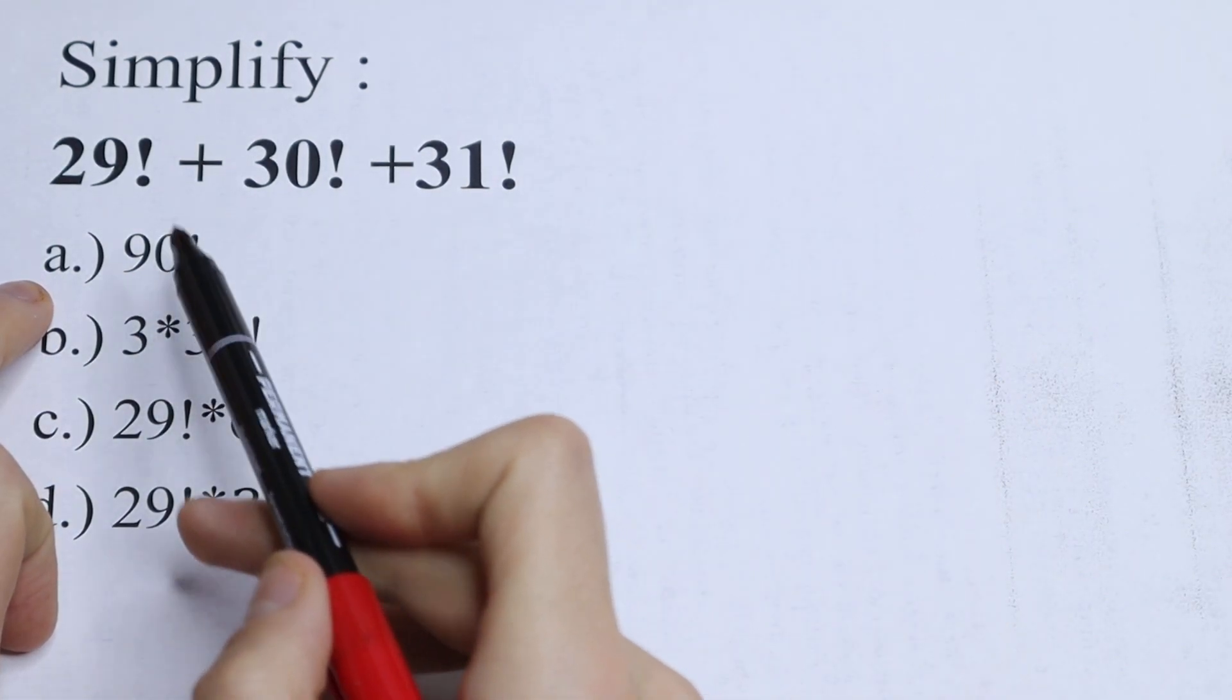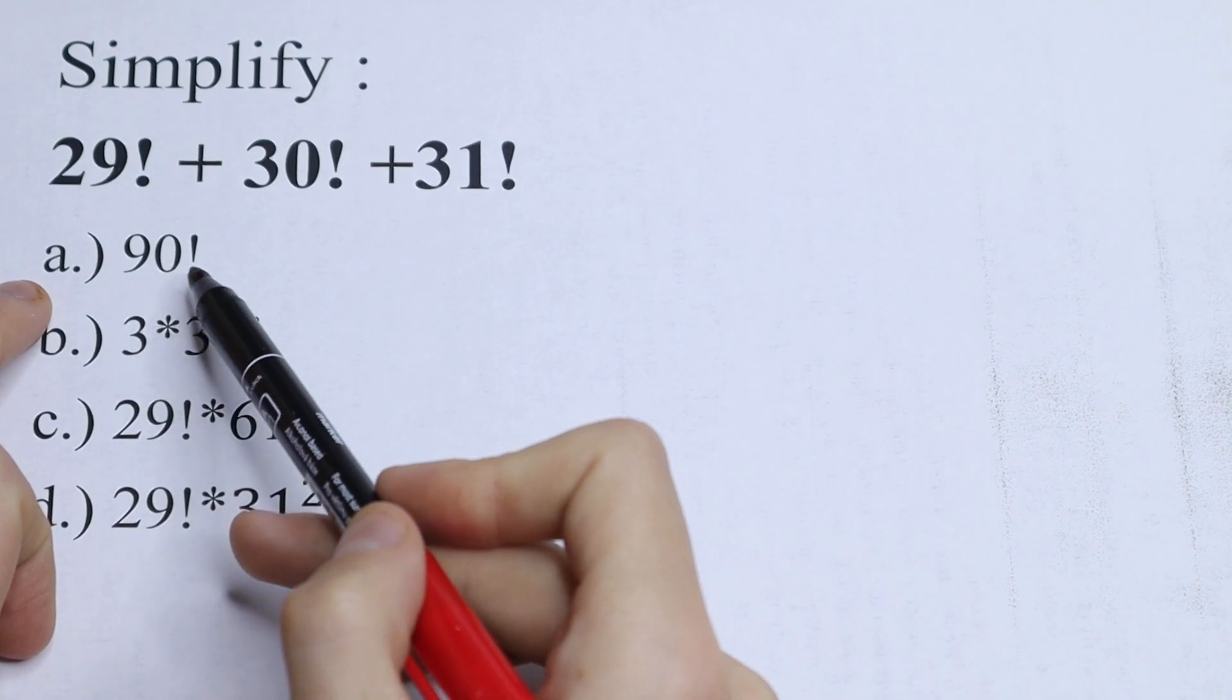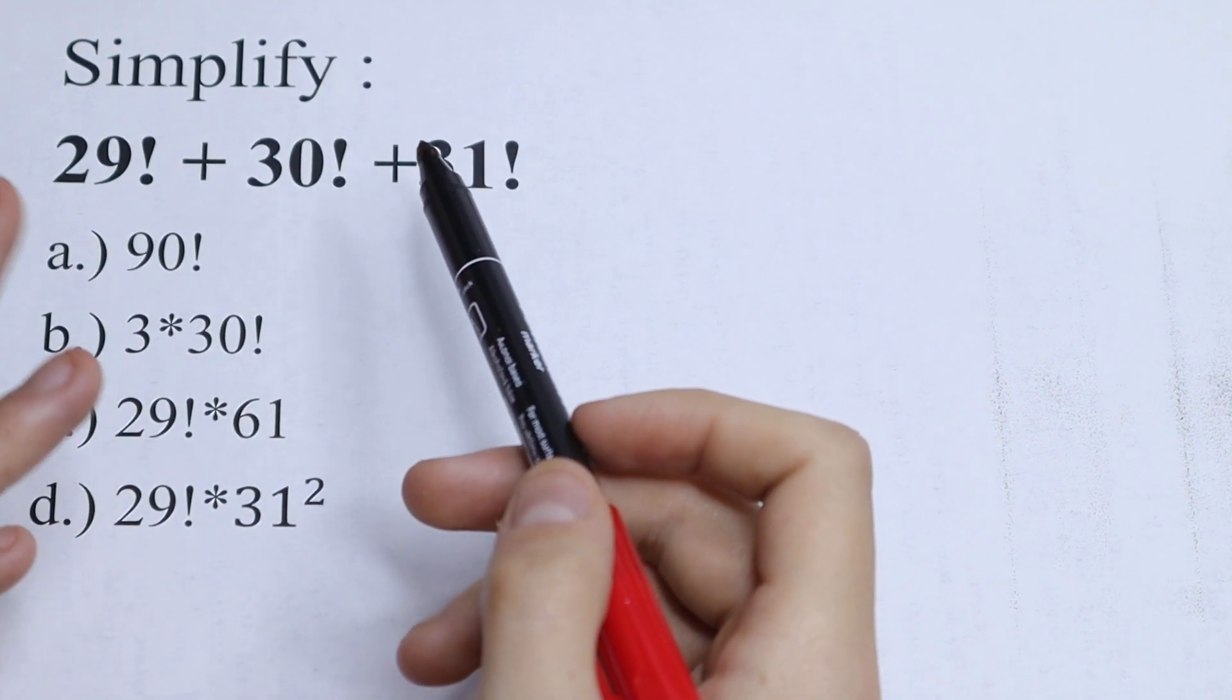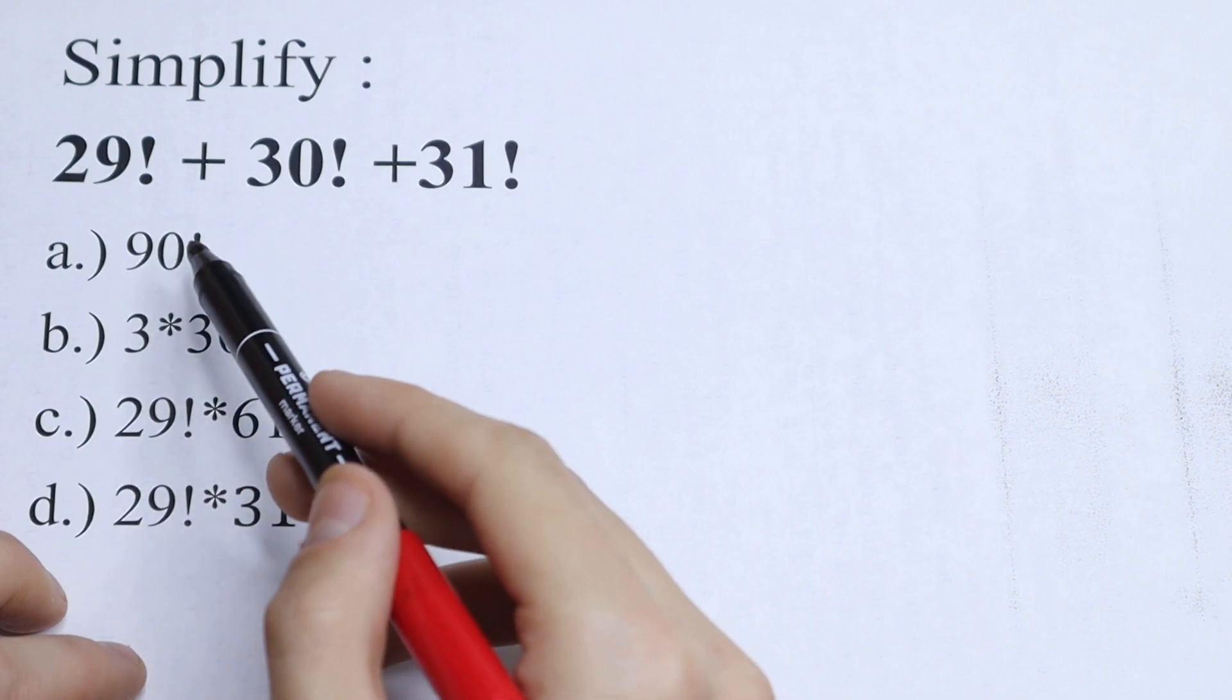The most obvious one is 90, because if we add all of this we will have 90 factorial, but this is wrong. This is the most common mistake I've ever seen. So what are we going to do in our case?